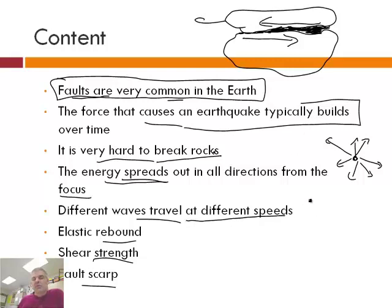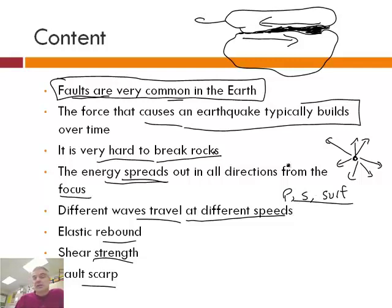And interesting enough, these different waves — the three waves we've talked about, sort of four — the primary, the secondary, and then we'll just say the surface, although there's two kinds of surface waves — they all travel at different speeds, and those different speeds actually teach scientists many cool things, which we'll talk about later.